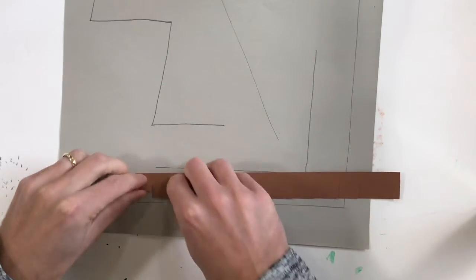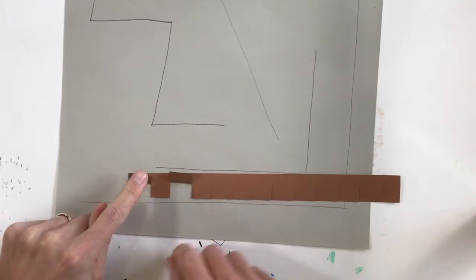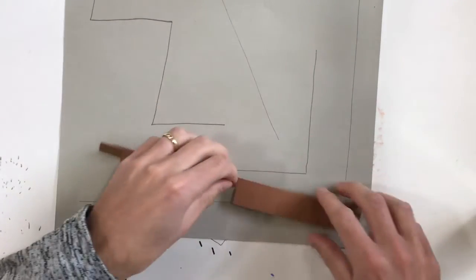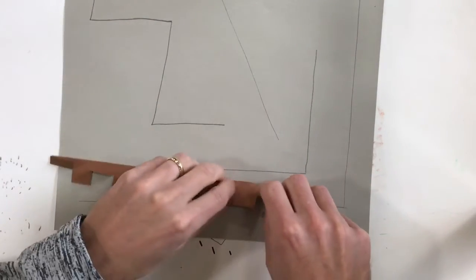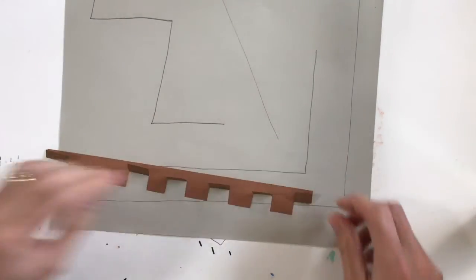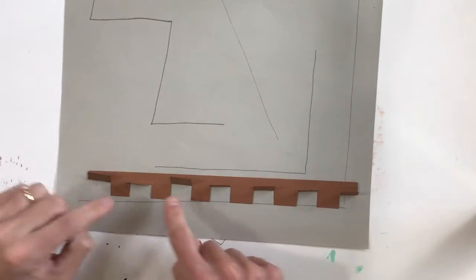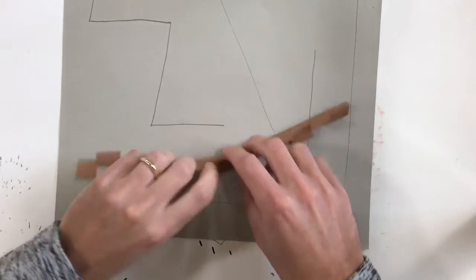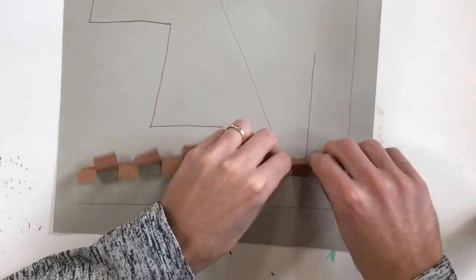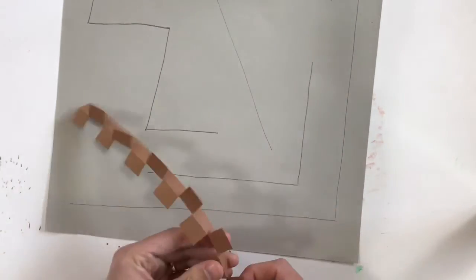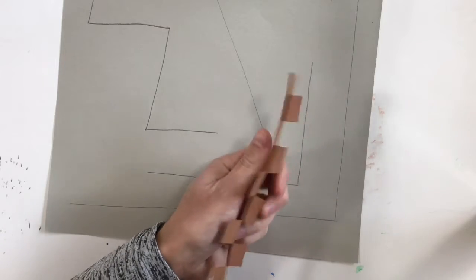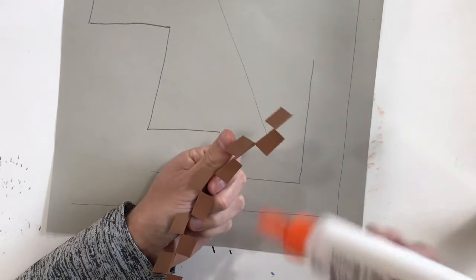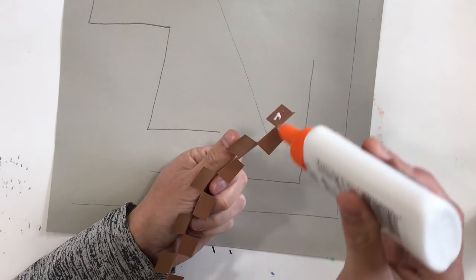And now I'm going to fold every other one. So I'm going to fold one, skip one, fold one, skip one, fold one, skip one like this. And I can flip it over. And now these ones that I skipped are going to get folded the other direction like this. So it gets almost like this zipper pattern on the bottom, right? Kind of weird looking. I'm going to put just a little bit of glue on the bottom of each one of these.